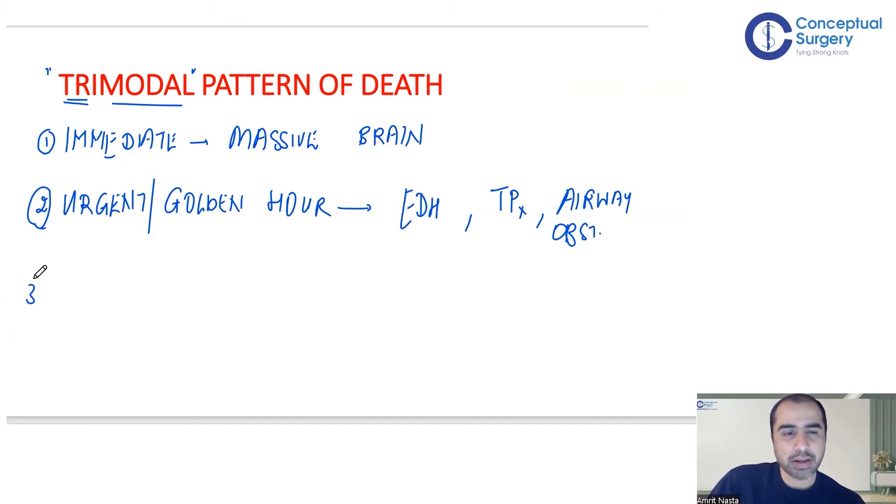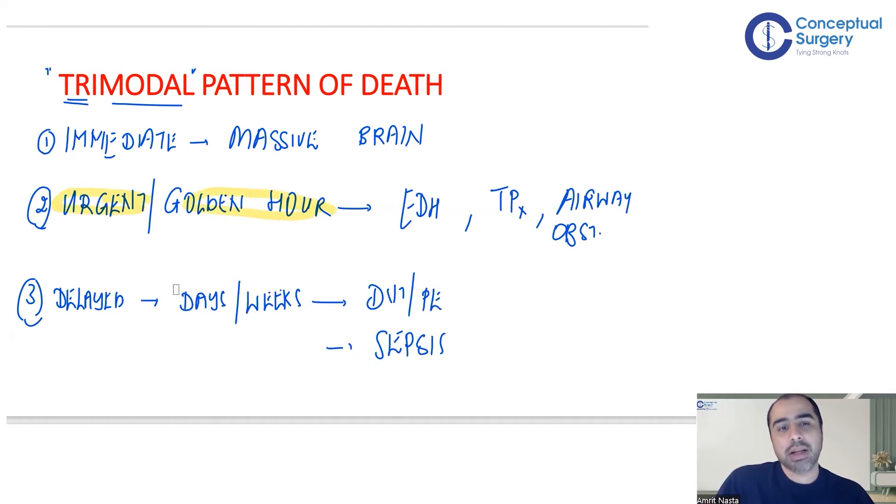The third type of death secondary to trauma is delayed death - within days to weeks. There are many causes of a person dying days to weeks after trauma. They can die from DVT or pulmonary embolism, or from a wound that led to septicemia. These delayed causes of death are entirely preventable.